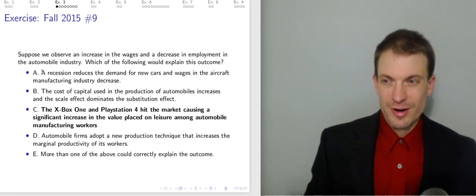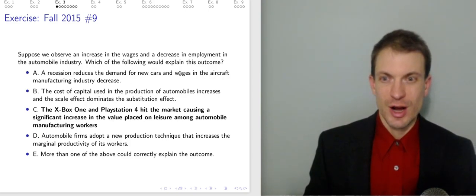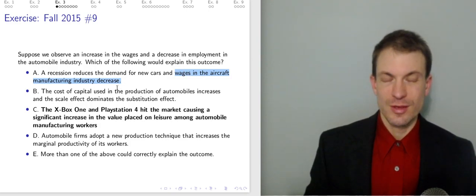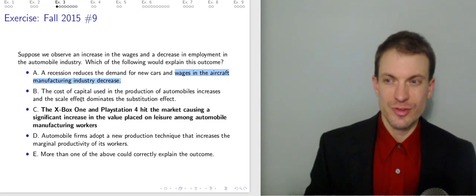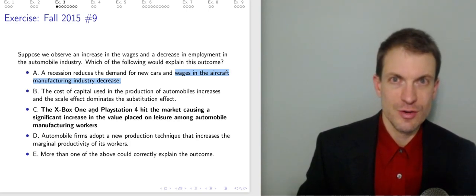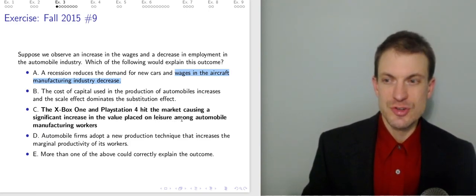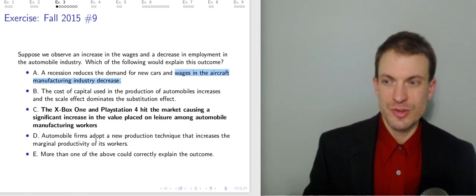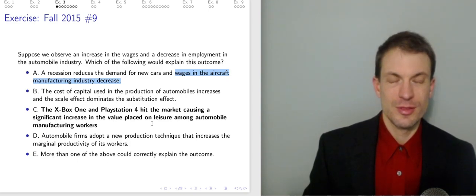Our options are: A) a recession reduces the demand for new cars and wages in the aircraft manufacturing industry decrease; B) the cost of capital used in the production of automobiles increases and the scale effect dominates the substitution effect; C) the Xbox One and PlayStation 4 hit the market causing a significant increase in the value placed on leisure among automobile manufacturing workers; D) automobile firms adopt a new production technique that increases the marginal productivity of its workers; and E) more than one of the above could explain the outcome.